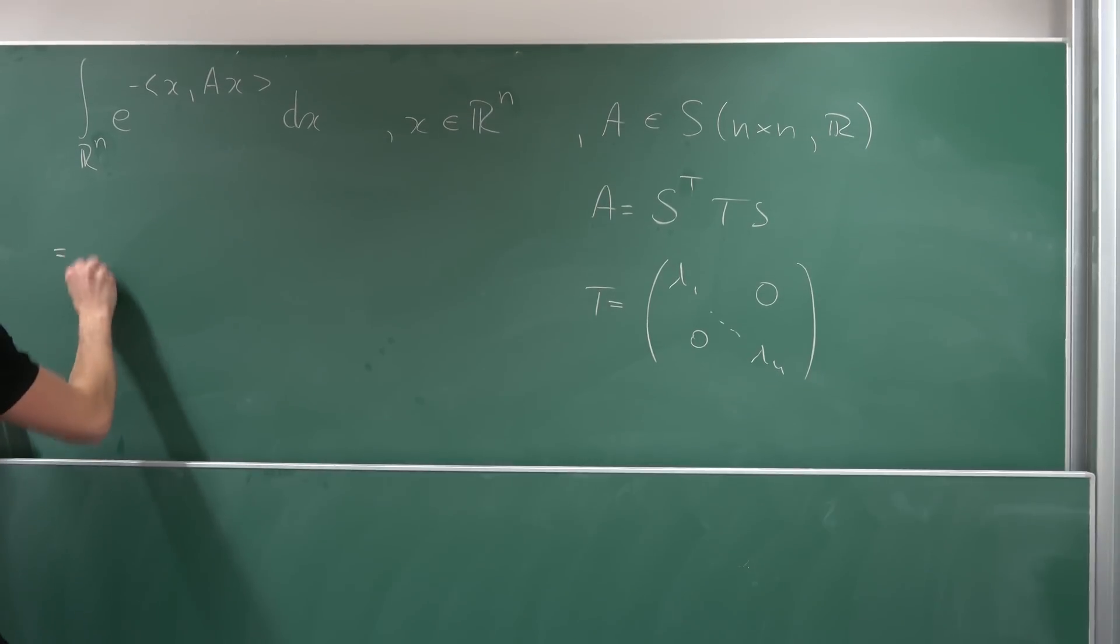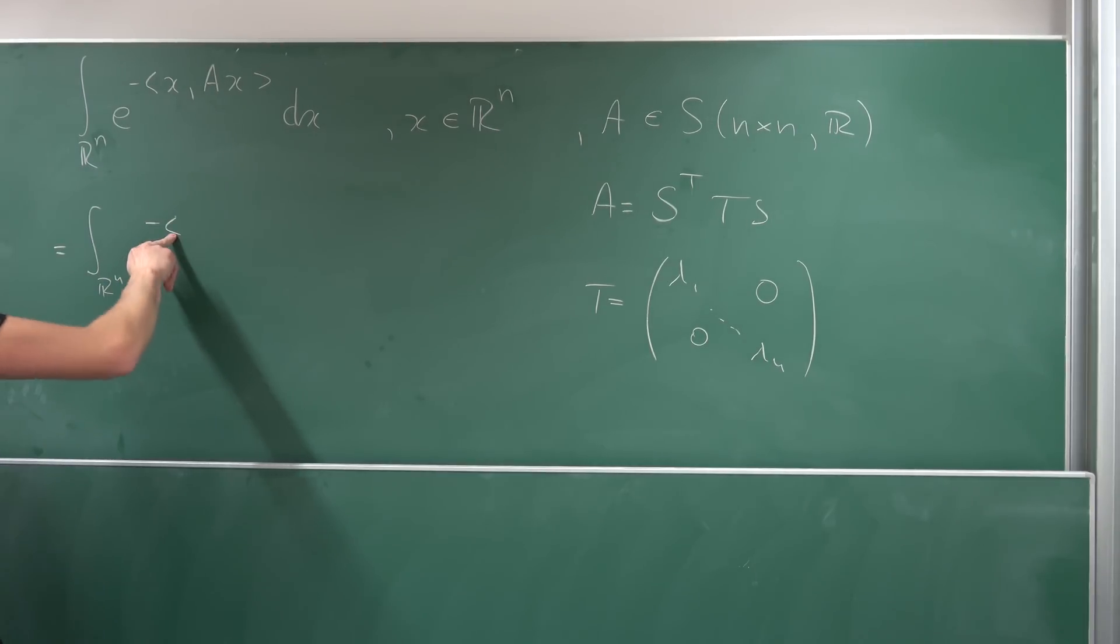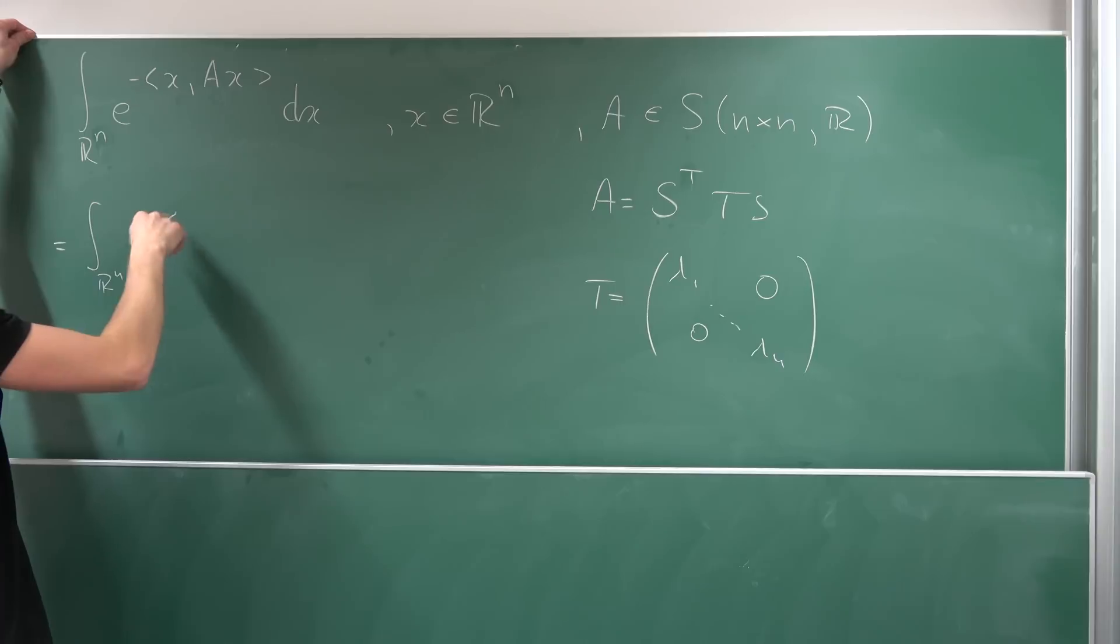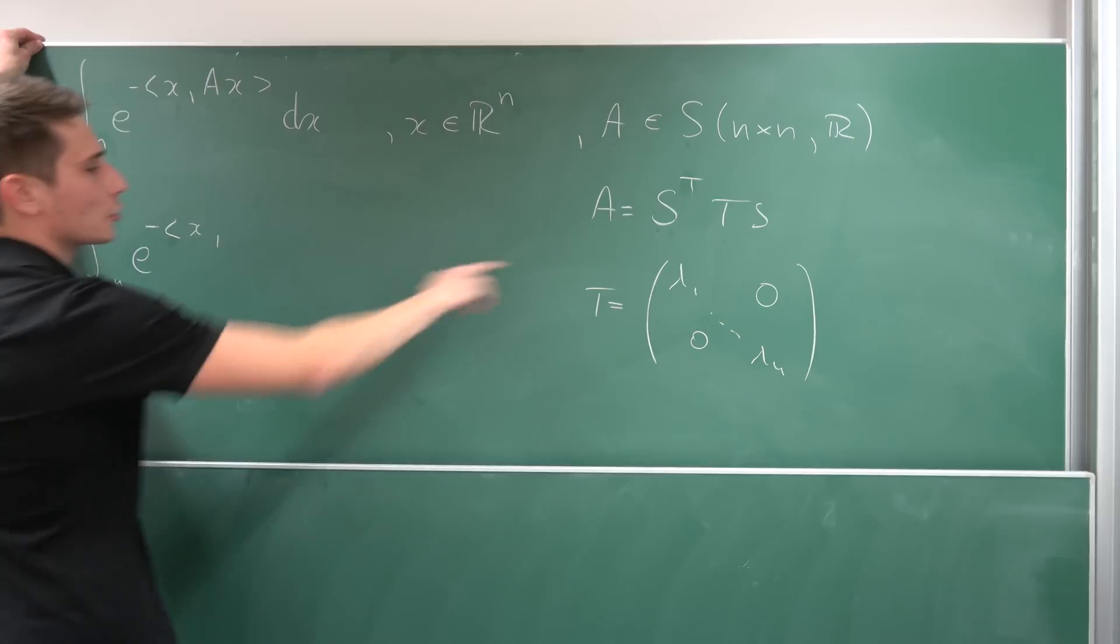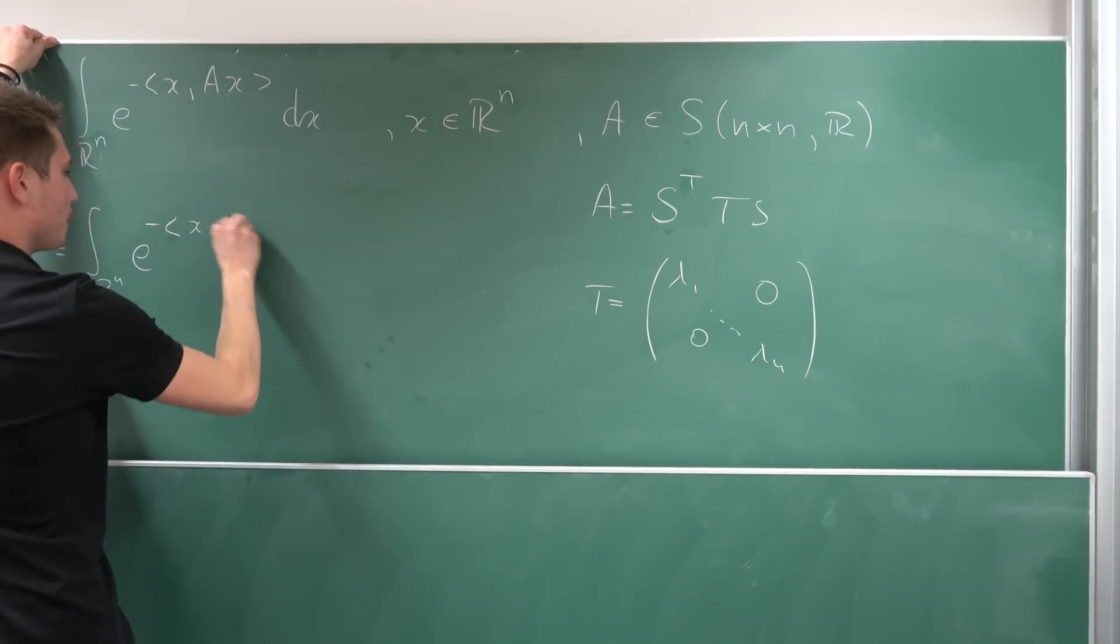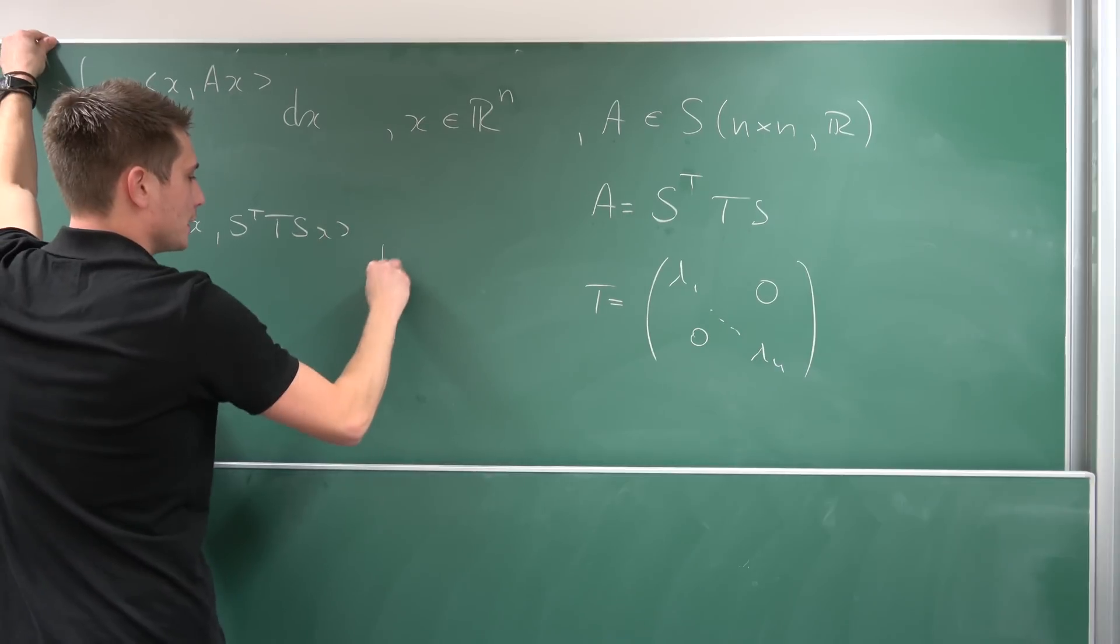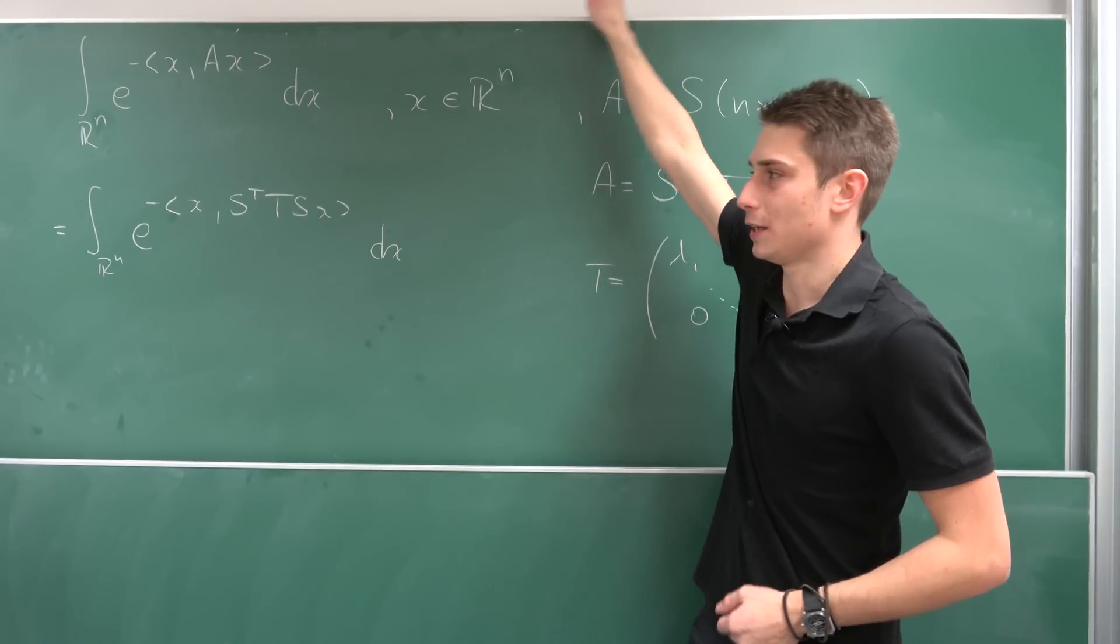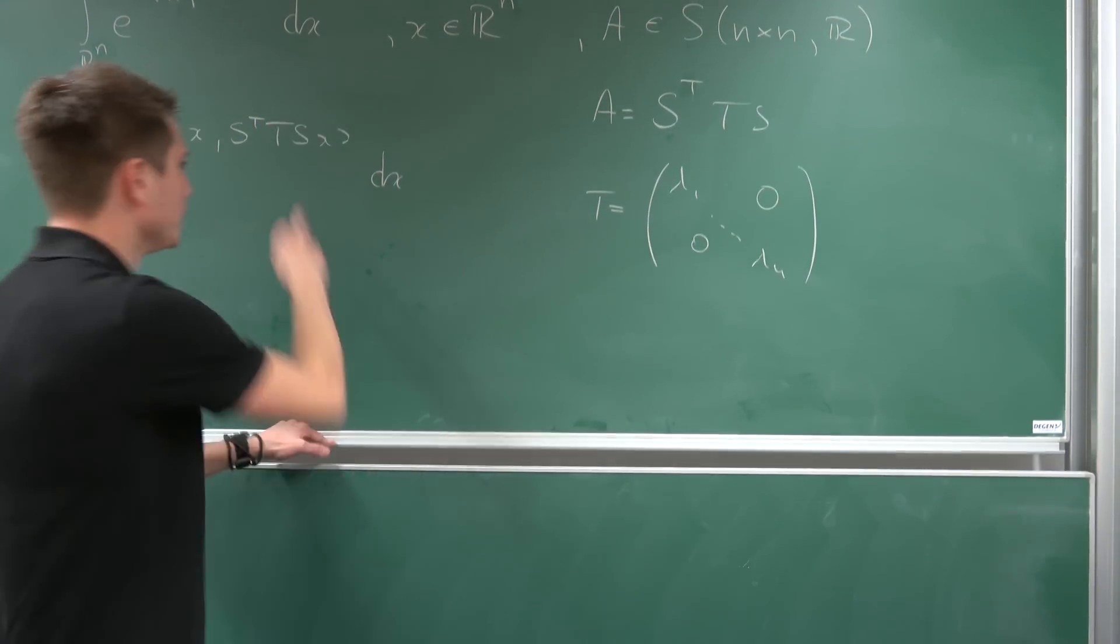So now we can rewrite this as an integral over r to the n, e to the negative, okay, now we have the inner product. So this is just like the generalized dot product. You could say x, and now we have this right here, s transpose t s times x integrated with respect to x. This is already cool. And now I would like to take a look at the inner product right here, because we can actually rewrite this a little bit.